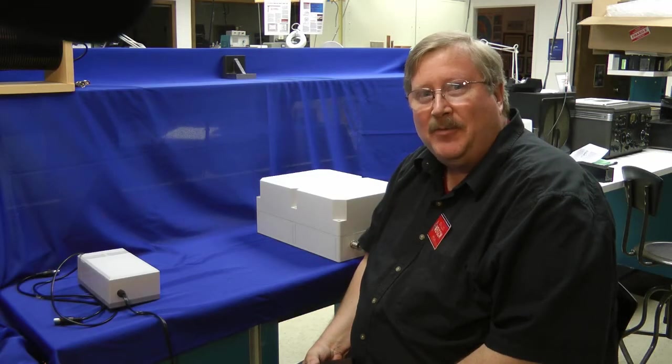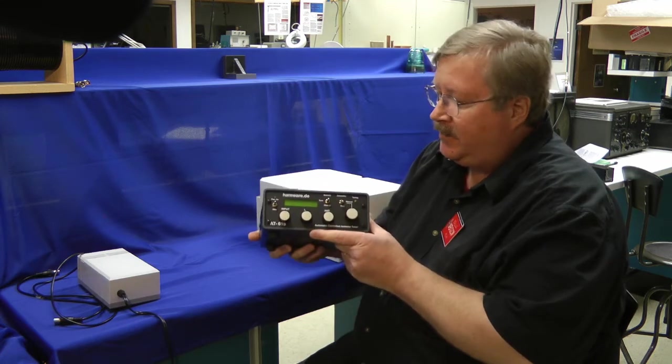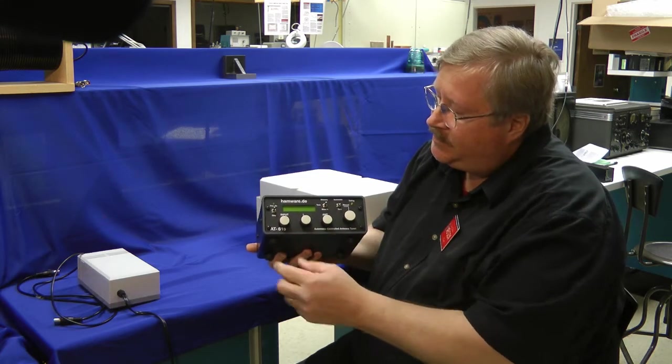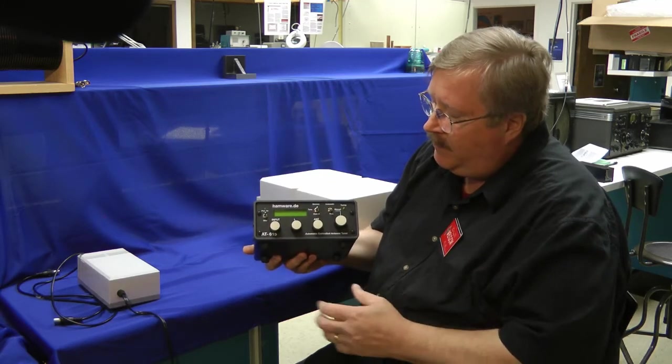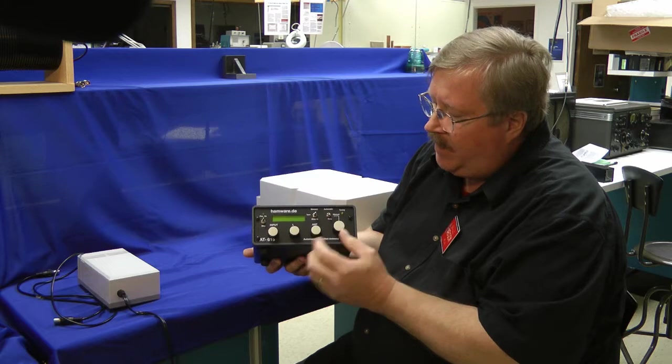Well, let's see what you get with the Hamware.de 615B Antenna Tuner. You get this control box. This is the antenna tuning adjustments right here for manually tuning the antenna. And once tuned,